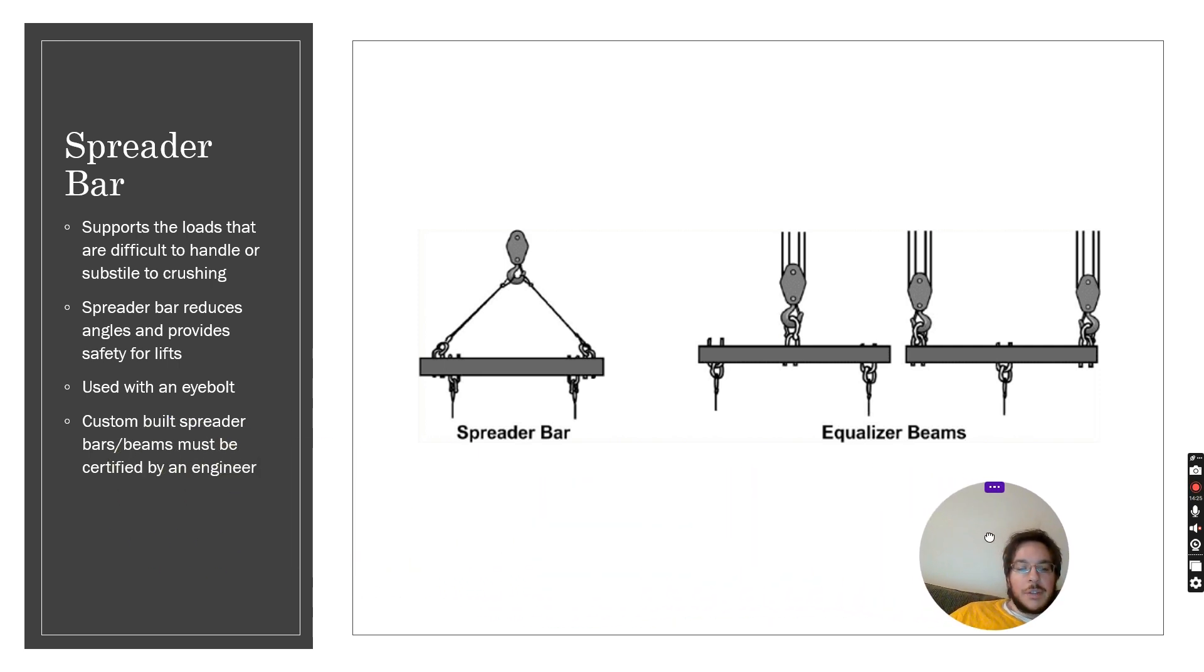Now when we're lifting we can add an eye bolt and so we have a hook here and then we've got our chains and then we've got our eye bolts. And sometimes we're lifting from a single point but it's not practical to attach a single hook to our load. Our load might be big and bulky or it might not have an anchor point right in the center of gravity.